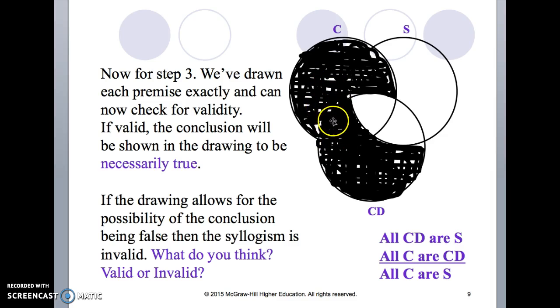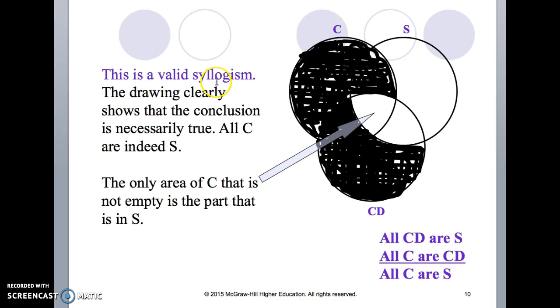This argument would be a valid argument. Now if there were some unshaded area out here, that tells me there is something in the C circle that's not an S and that would be invalid. This is a valid syllogism.